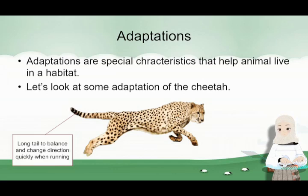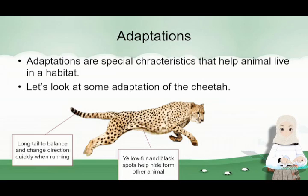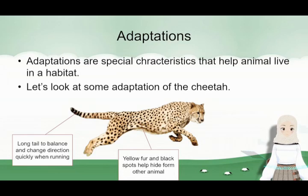Cheetah ini is the fastest land animal on earth. Because ia very, very fast, it needs a long tail supaya ia boleh kekiri kekanan very, very quickly so that it can catch its prey. It has yellow fur and black spots to help hide from other animals. Ia punya fur ini diubah supaya match sama rumput di mana ia tinggal di Afrika.